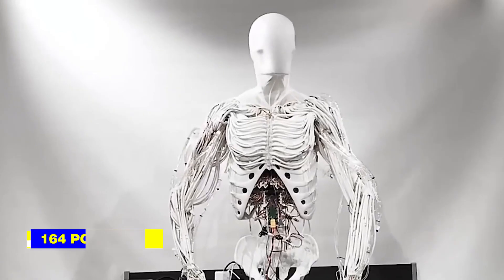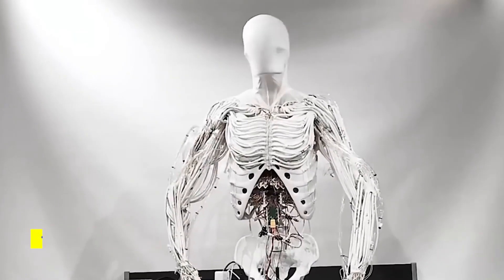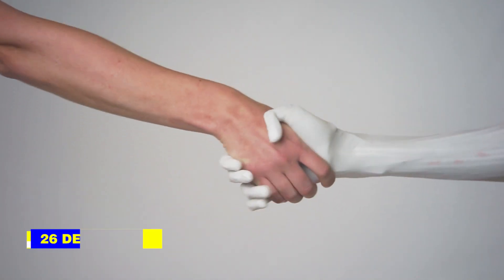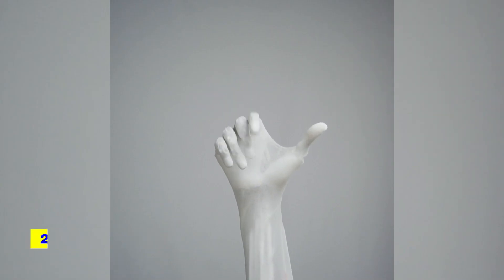Its upper body alone has 164 points of articulation, with each hand, wrist, and elbow combination offering 26 degrees of freedom. That kind of flexibility is rare even in advanced robotics.